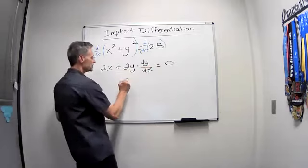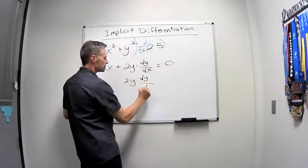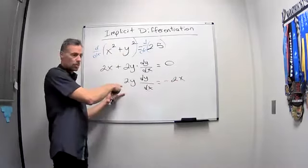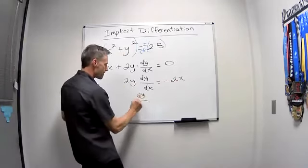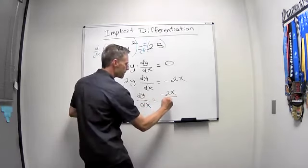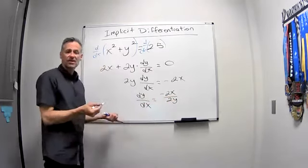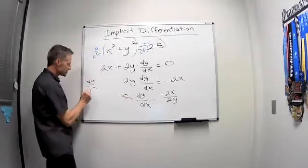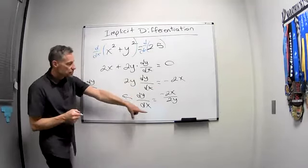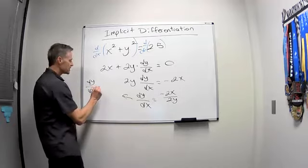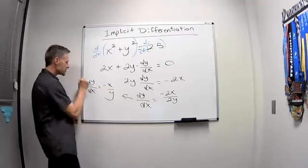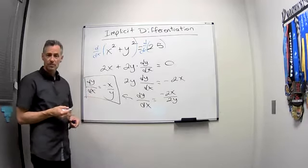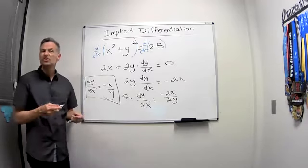Well, subtract 2x from both sides. Divide by 2y. And then if you want to simplify that, you can. We'll just put it over here, dy/dx. Reduce the two away, just negative x over y. And there's my answer. That's the derivative of that function in terms of x. Let's try another one. We're going to make it a little harder, of course.